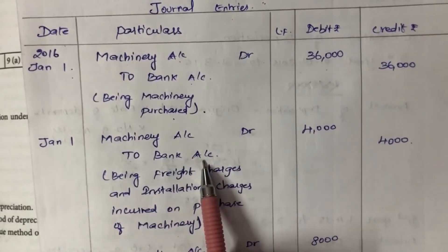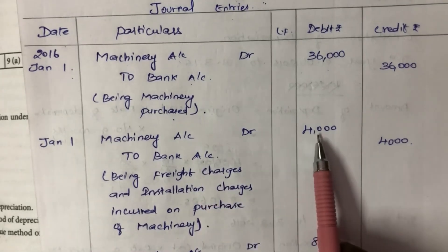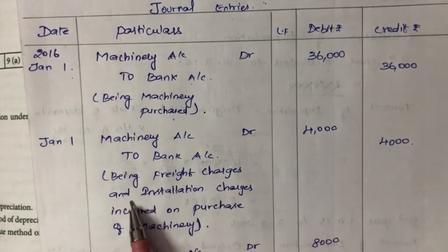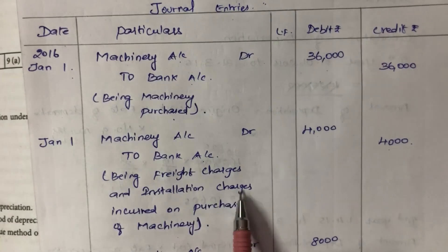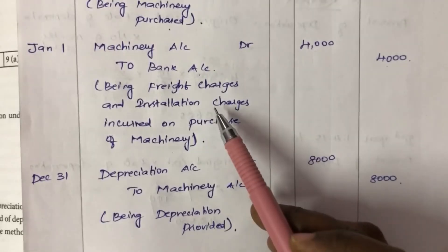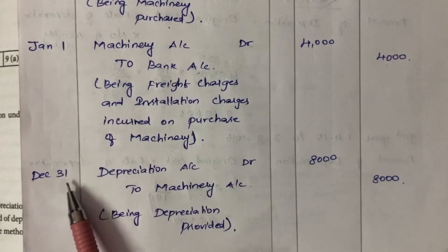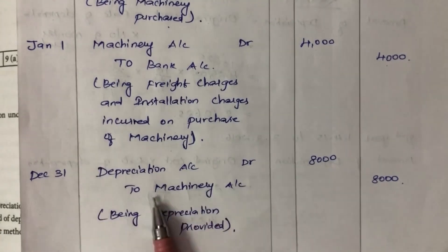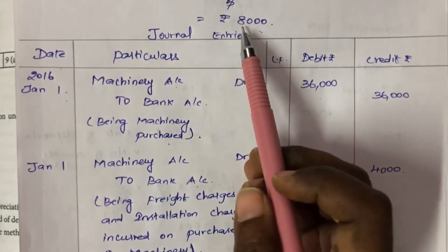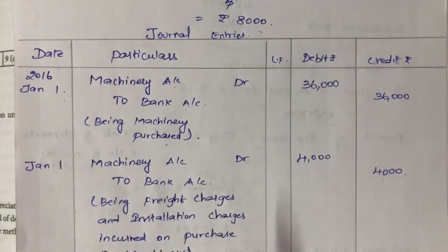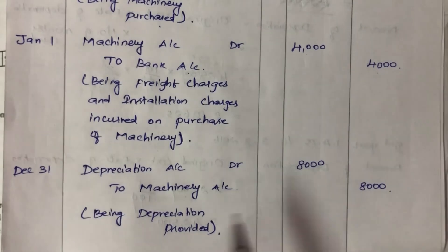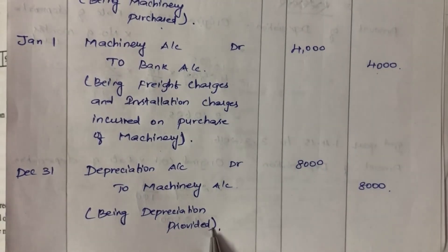On the same date, the bank account entry for freight charges and installation charges is 4,000 rupees, being freight charges and installation charges incurred on purchase of machinery. For the first year, accounts closing date is December 31st, so depreciation account is 8,000 rupees. The next year, we enter being depreciation provided.